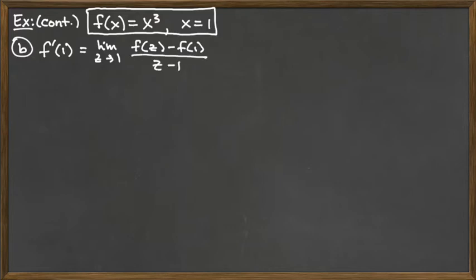That's the setup for this limit definition. What we need to do, just like last time, is compute the top using our function. F of z — we're just replacing the variable x with the variable z — so instead of x cubed, it would be z cubed.